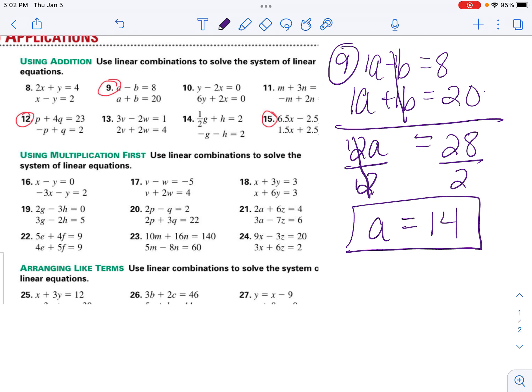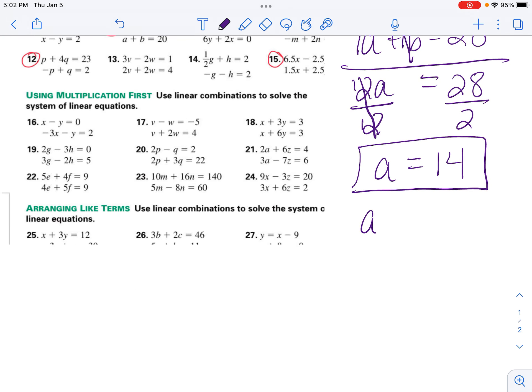So now I'm going to take either one of my first equations. I'm just going to choose, doesn't matter which one, a plus b equals 20. Everywhere there's an a, I'm going to substitute the 14. 14 plus b equals 20.